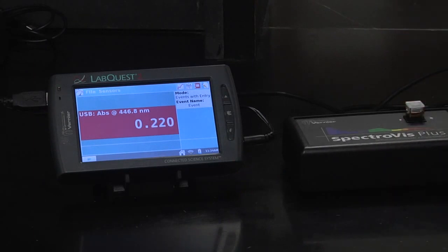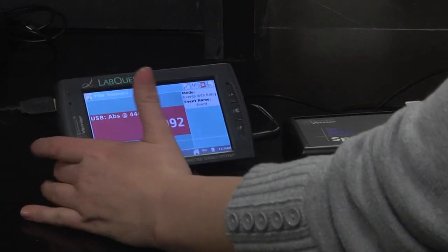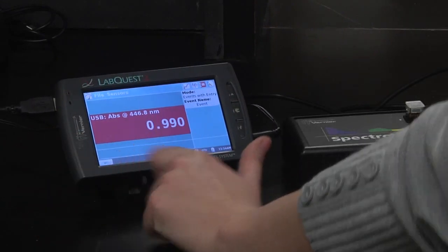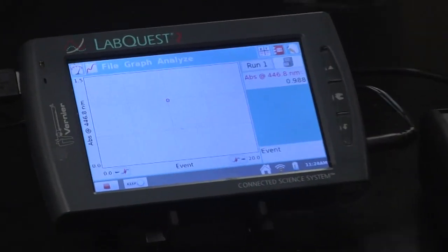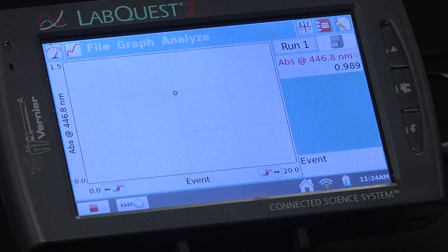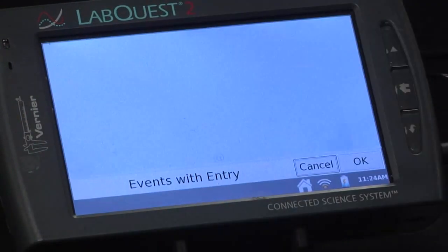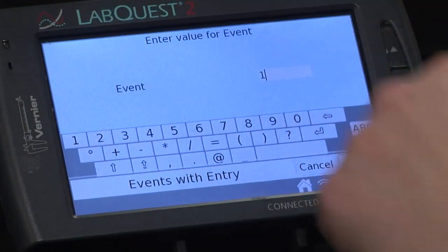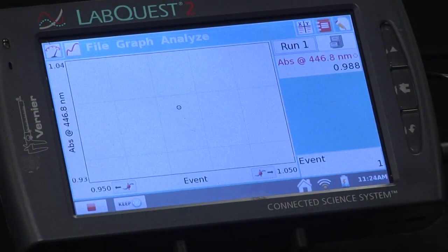Press play down here at the bottom left and it'll change to this graph screen automatically. Once it's settled on a number, you're going to press keep and it'll say beaker number one or event one.